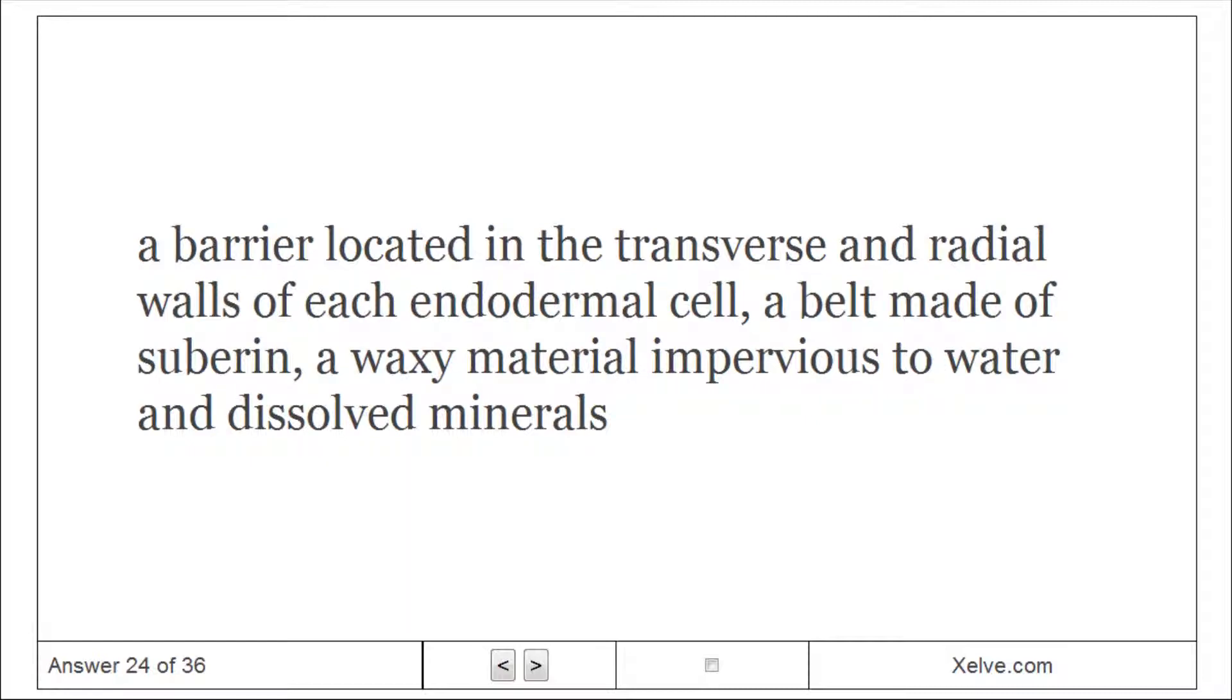Casparian Strip: A barrier located in the transverse and radial walls of each endodermal cell, a belt made of suberin, a waxy material impervious to water and dissolved minerals.